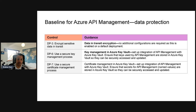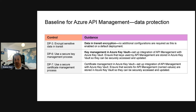The data protection baselines are DP3, DP6, and DP7. DP3 is around encrypting sensitive data in transit — configuring data-in-transit encryption. DP6 is about using secure key management, leveraging Azure Key Vault. DP7 is about using a secure certificate manager — again using Azure Key Vault and integrating it with API Management.